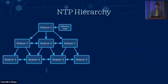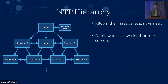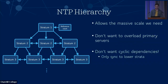There are several reasons why we have this hierarchy. First, it allows the massive scale we need across the internet where we have probably billions of devices that all need to be synchronized. We don't want to overload the primary servers with millions of requests, so we delegate to secondary servers and so on down the hierarchy. It also prevents cyclic dependencies where servers would be synchronizing to each other in a loop and might get synchronized to each other but not to the actual real time.